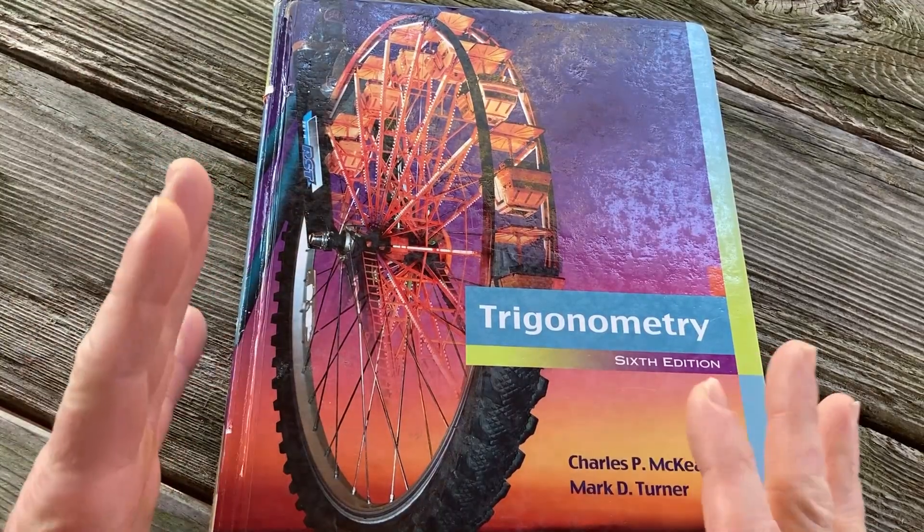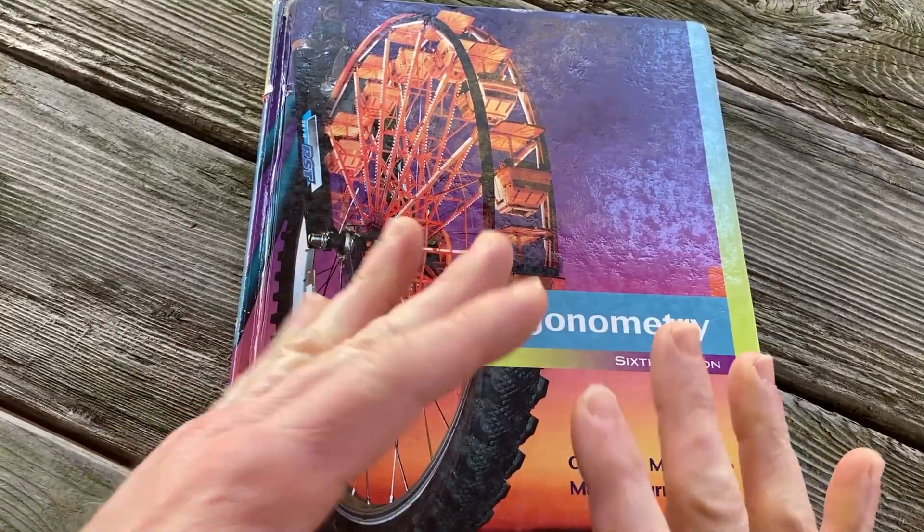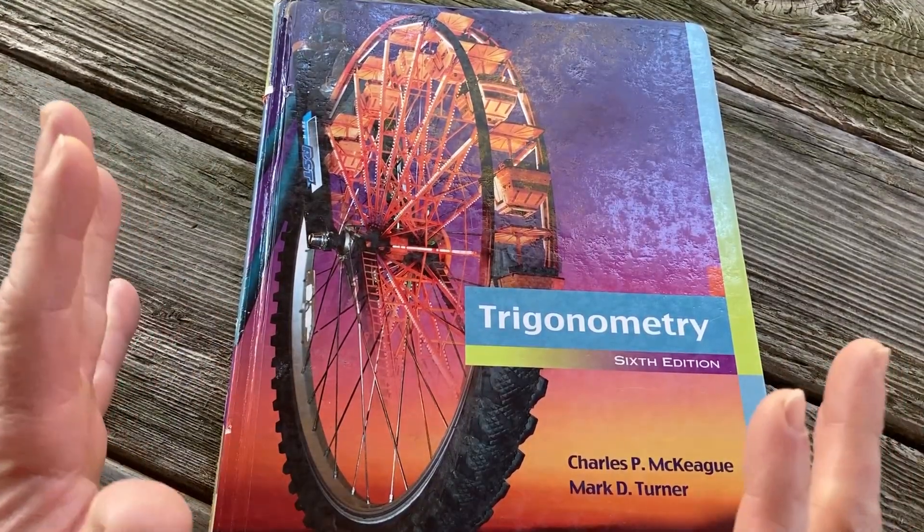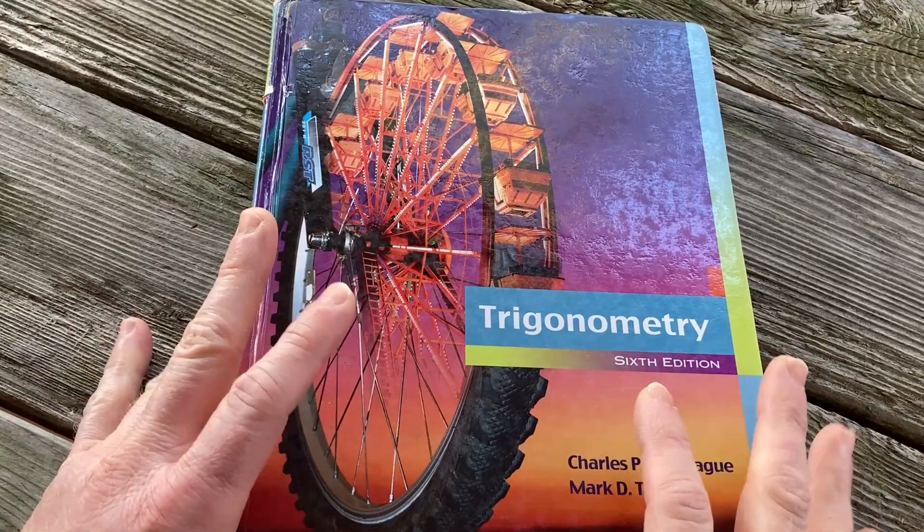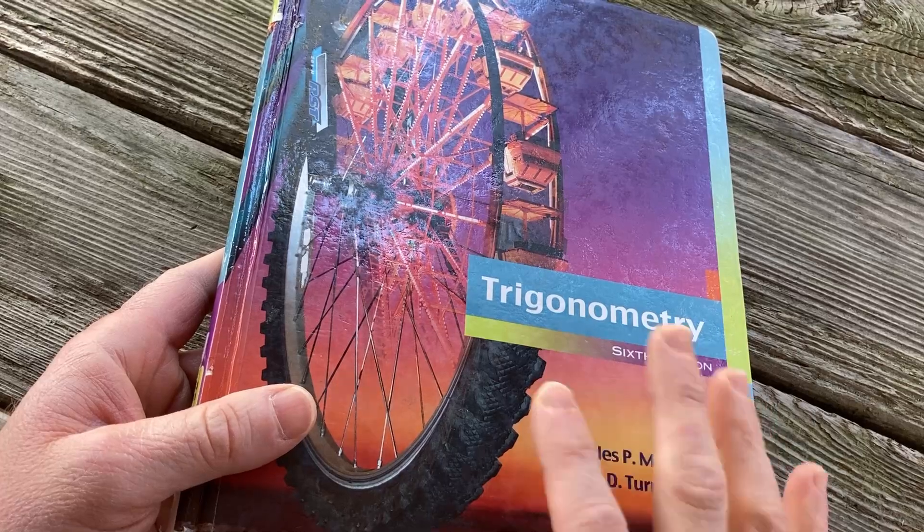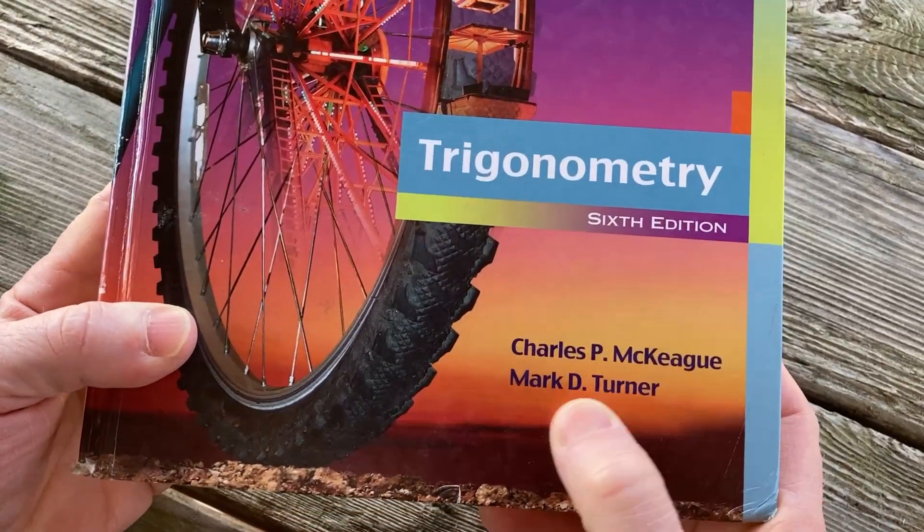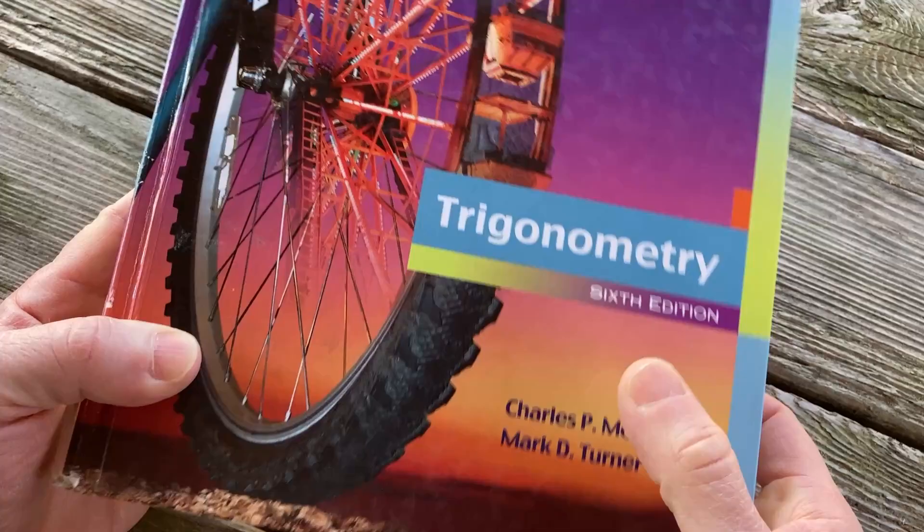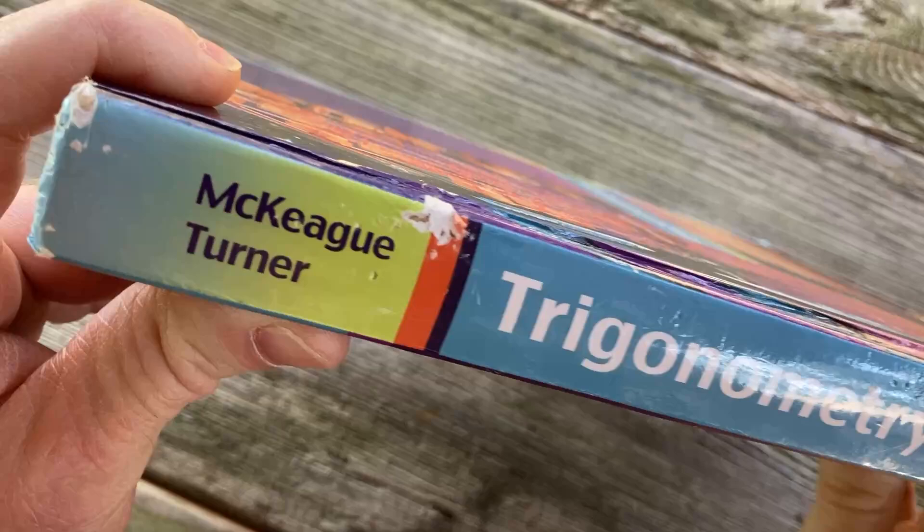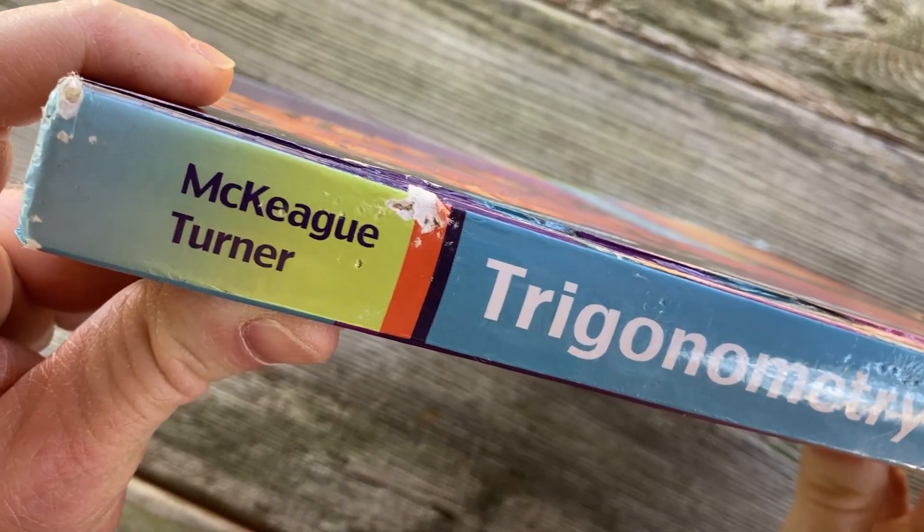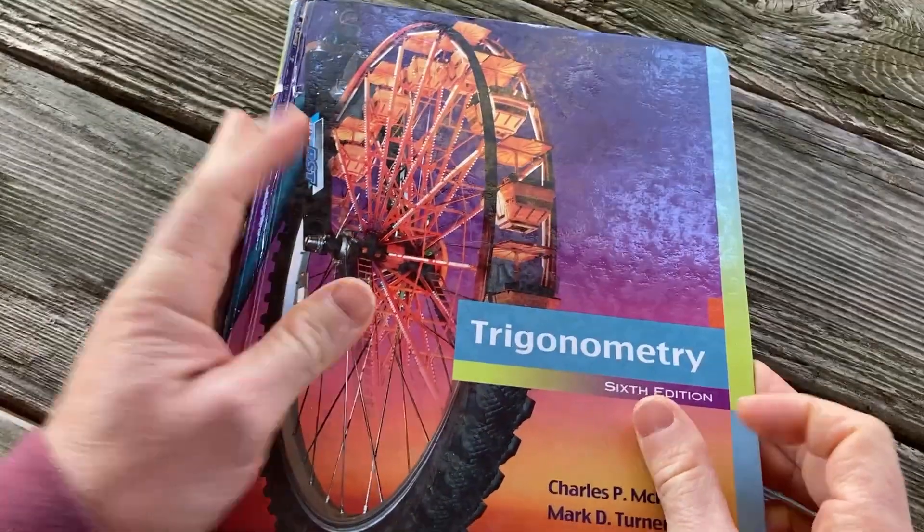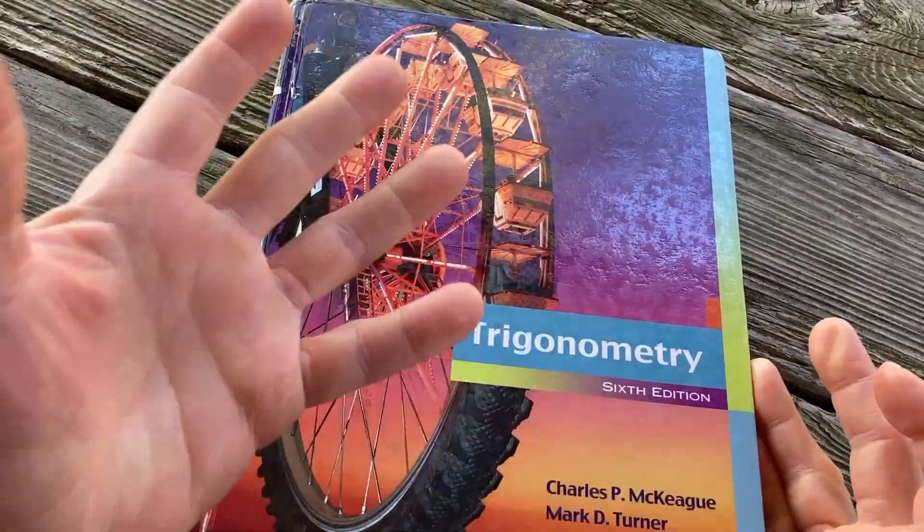But in this video, I want to show you a book that is called Trigonometry, an entire book on trigonometry. I have found that typically when you get a book on trigonometry, you're going to get a more thorough treatment because the whole book is on trig. This one is by Charles P. McKeague and Mark Turner. It's the sixth edition. I will look for this book and leave a link in the description in case you want to check it out. So I think it's a solid book, and usually these books aren't that expensive.